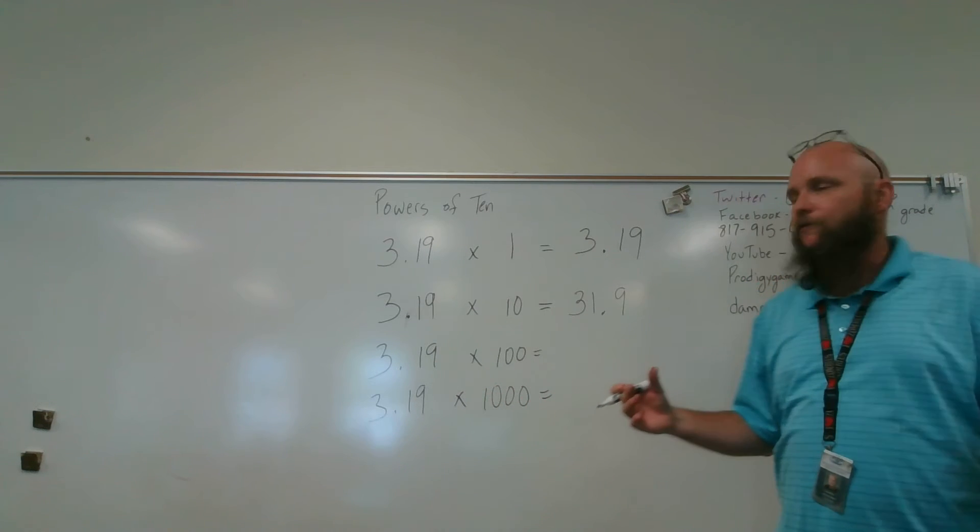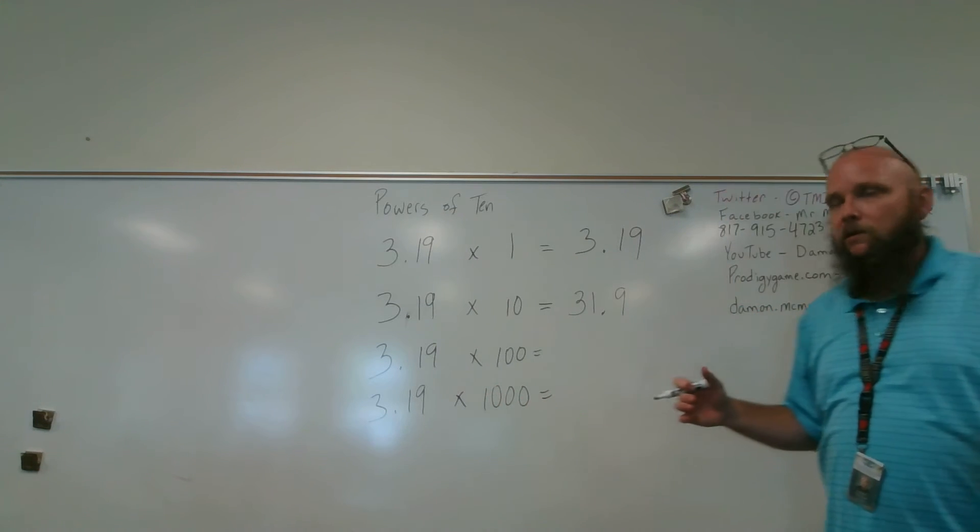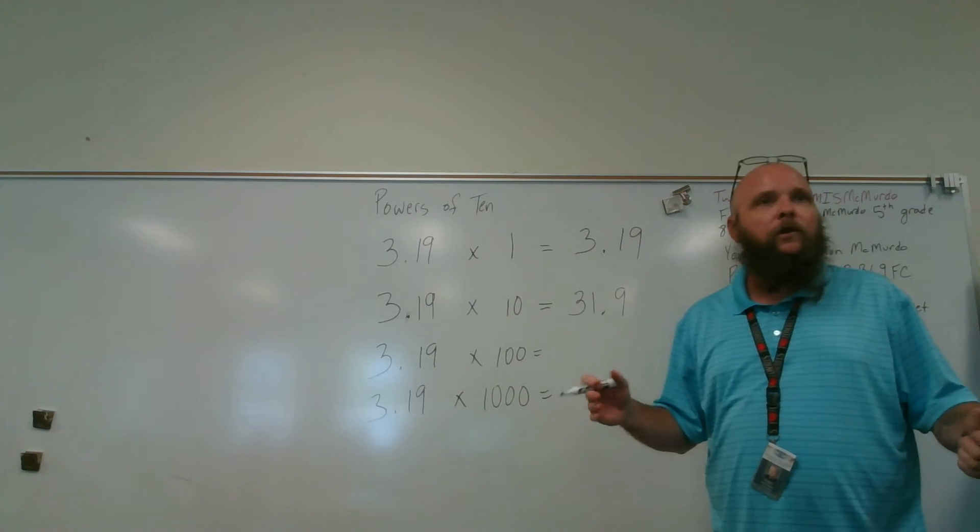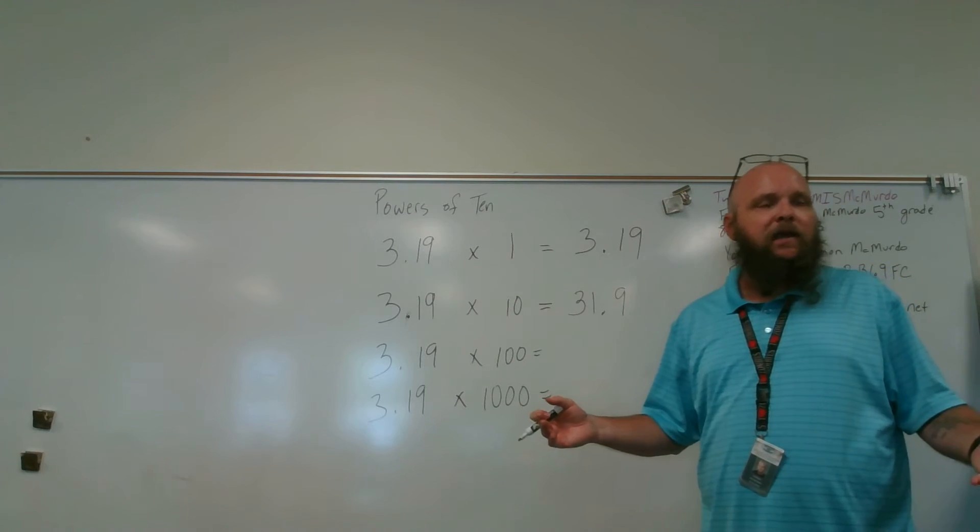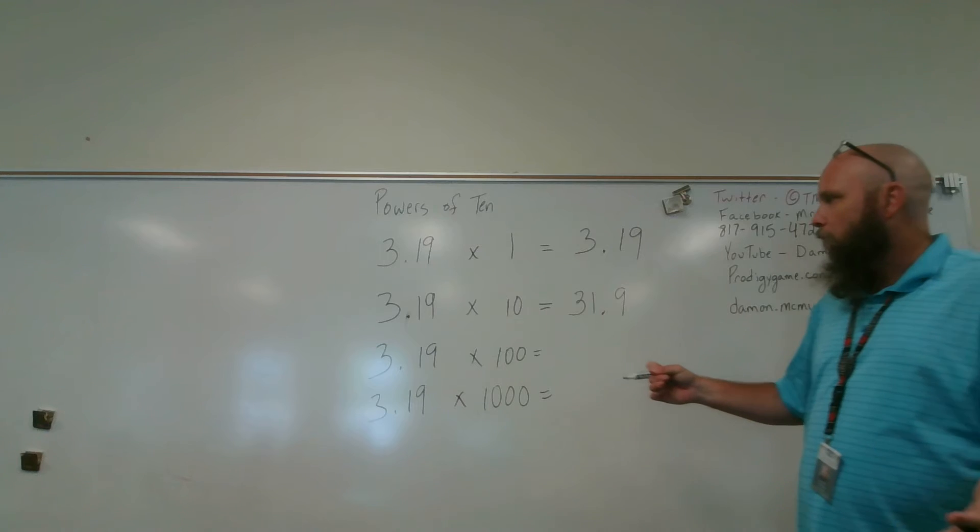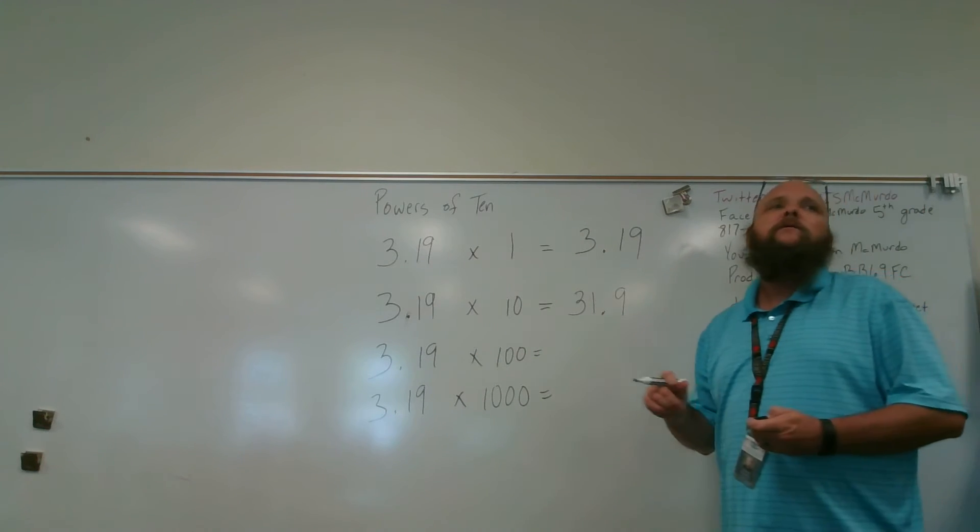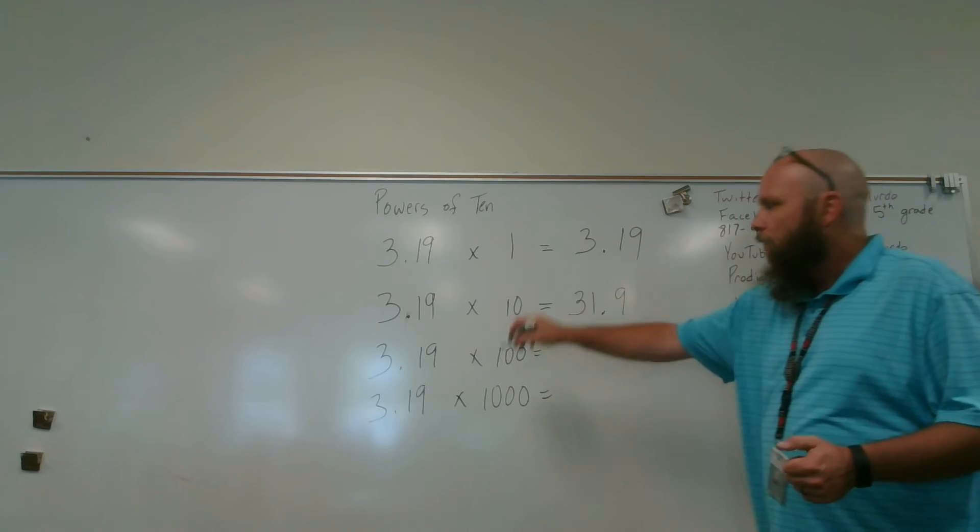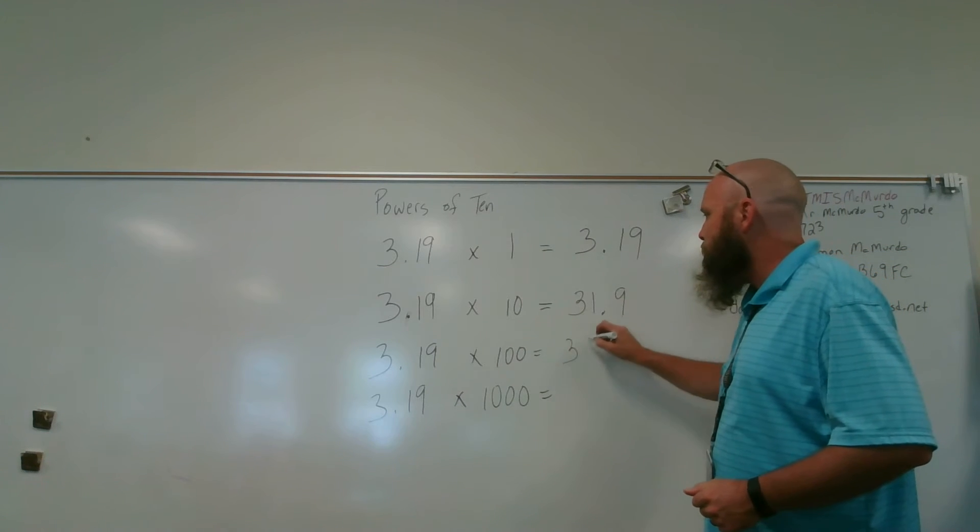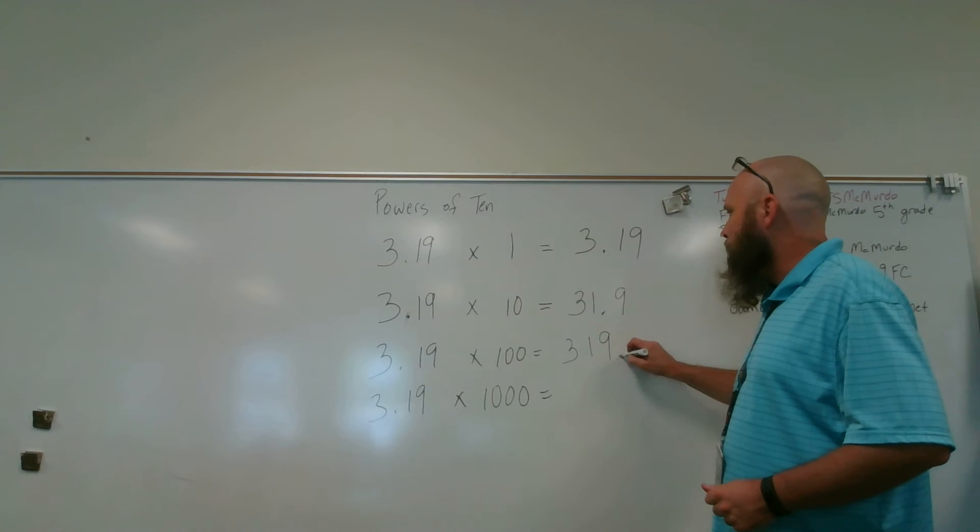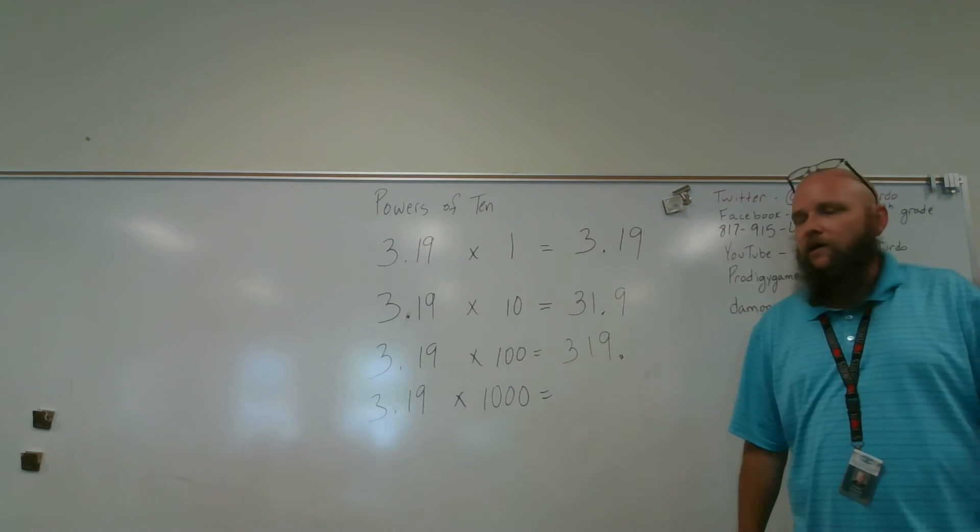So, 3.19 times 1 is 3.19. Now, Matthew, I'm multiplying 3.19 by 10. So, what's going to happen to it? I move it to the right one place. So, this now is 31.9, which is greater than 3.19. If I'm multiplying by a number that is greater than 1, my answer is going to get bigger. Matthew, now I'm multiplying 3.19 times 100. I moved the decimal place over two times. 319.